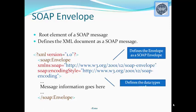Next is the encoding style attribute. This is used to define the data types which are used in the document. This attribute may appear on any of the SOAP elements, and applies to the element's contents and all of its child elements. By default, a SOAP message has no default encoding.